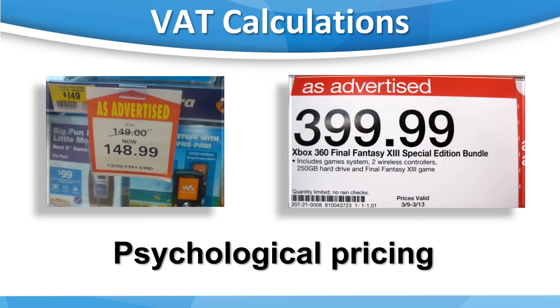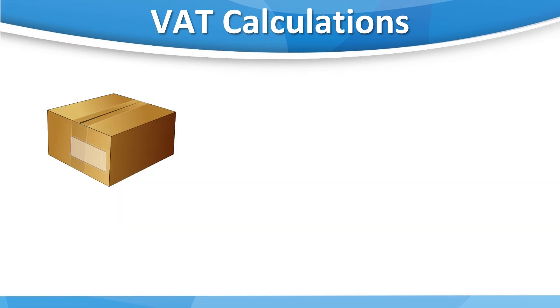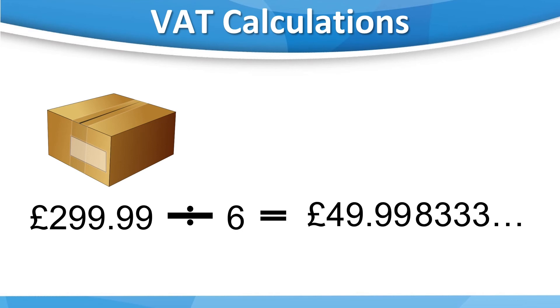The problem with this is that it's impossible to determine an exact price for the VAT. Let's take a price of £299.99. If we divide this by 6 we arrive at a figure of £49.99833 recurring. There are some complex rules for rounding these figures. But at level 2 you'll only deal with rounding for business-to-business transactions, and other rules will be covered at level 3.